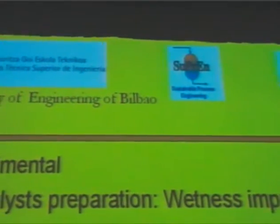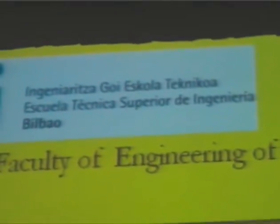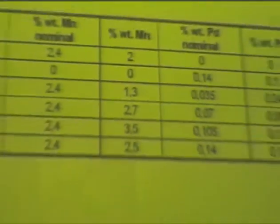This slide shows the nominal and real content of all the catalysts that were tested in this work. The catalysts were prepared by impregnation, by successive impregnation, at the surface of honeycomb-type monolith cordierite structures. After this impregnation, the catalysts were calcinated at 1000 degrees Celsius.